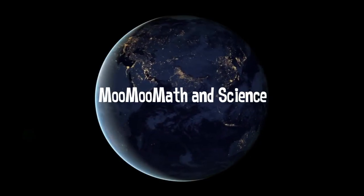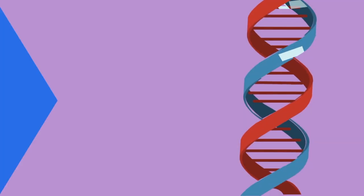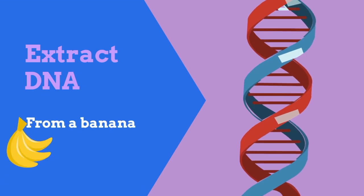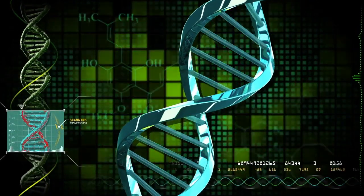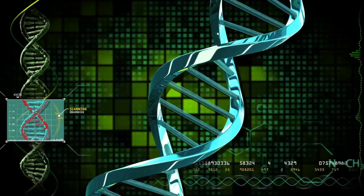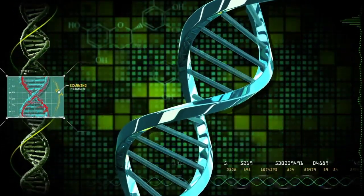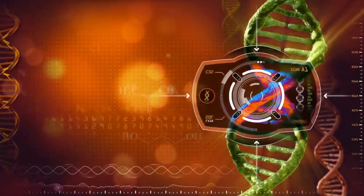Welcome to Moo Moo Math and Science. In this video, let's learn how to extract DNA from a banana. You've learned that it's a double helix, that it's the chemical of life. But what does real living DNA look like?